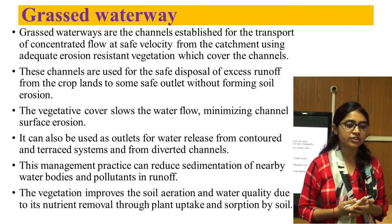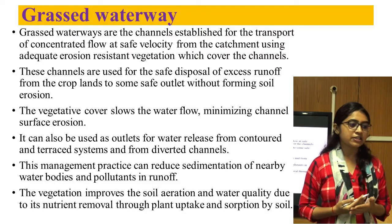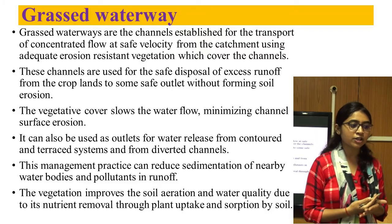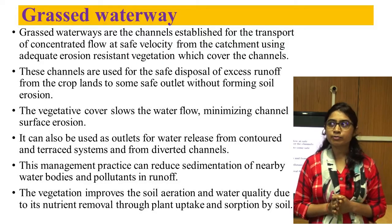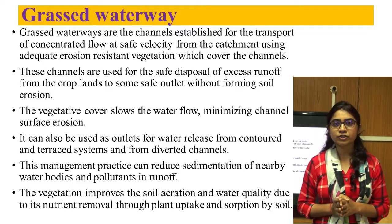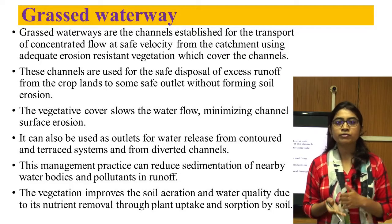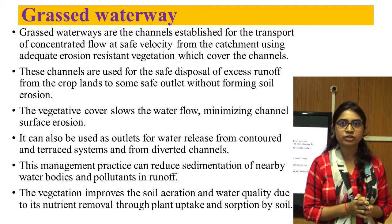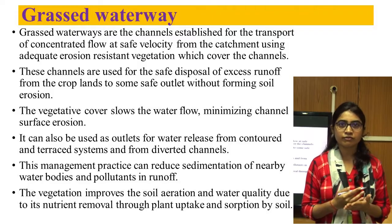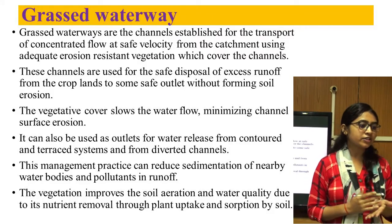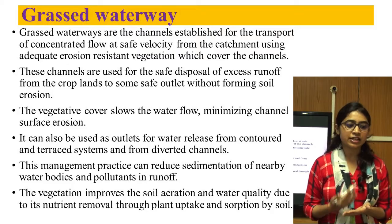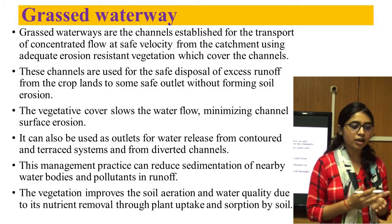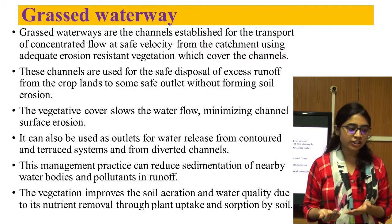Grass waterways are channels stabilized for the transport of concentrated flow at safe runoff velocity from the catchment, using adequate erosion-resistant vegetation which covers the channels. These channels are used for the safe disposal of excess runoff from cropland to a safe outlet without causing erosion. In a watershed, runoff velocity is very high, increasing soil erosion in the form of gully and rill. Grass waterway protects the soil from erosion through its vegetation cover, which slows water flow and minimizes channel surface erosion. It can also be used as an outlet for water release from contoured and terrace systems and from diverted channels.